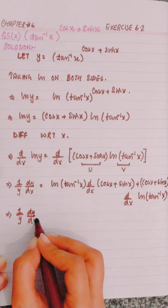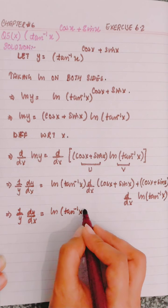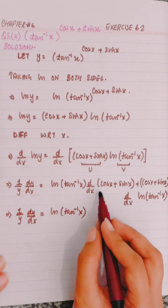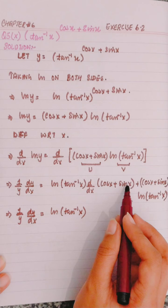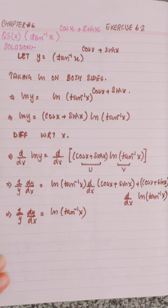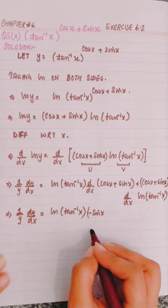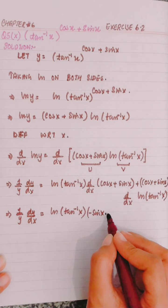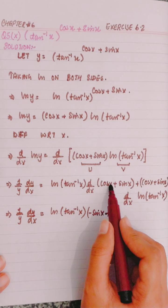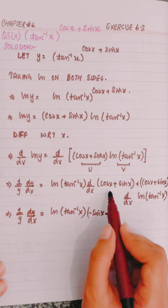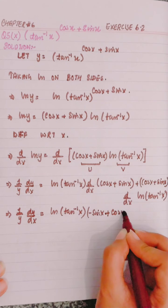1 over y dy by dx is equal to ln of tangent inverse x. Now, the derivative of cos x plus sin x: the derivative of cos x is minus sin x, and the derivative of sin x is cos x. So we get minus sin x plus cos x.